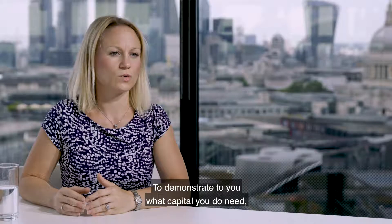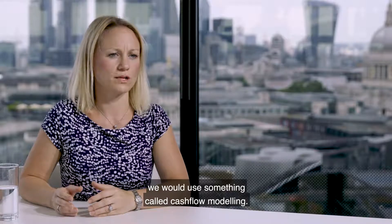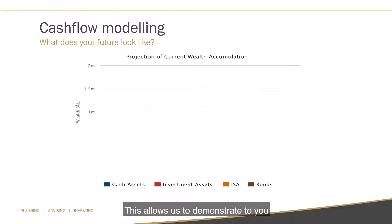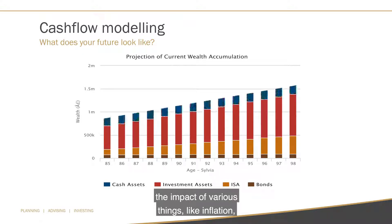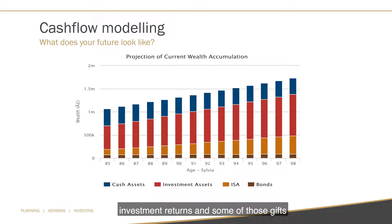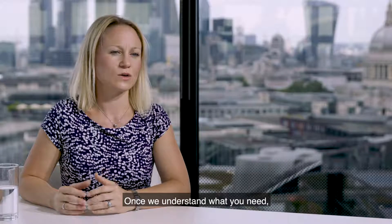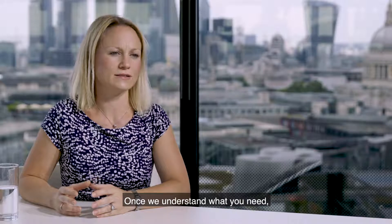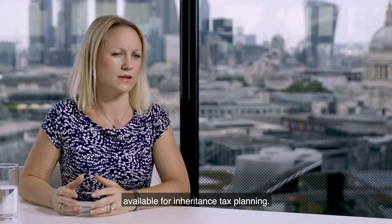To demonstrate to you what capital you do need, we would use something called cash flow modelling. This allows us to demonstrate the impact of various things like inflation, investment returns, and some of those gifts that you may have already committed to around property purchases, weddings, and school fees. Once we understand what you need, then we can start looking at what's available for inheritance tax planning.